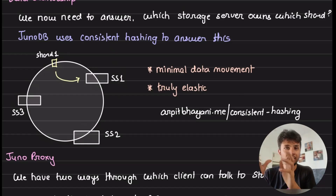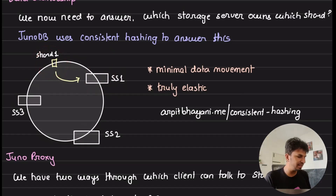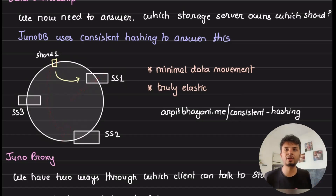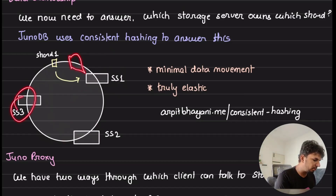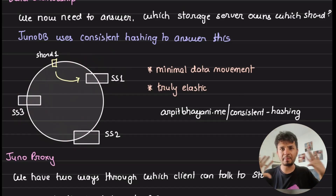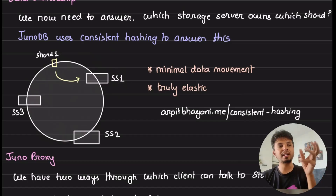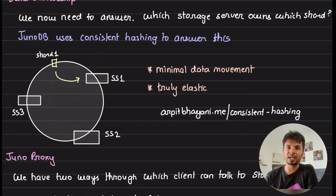The key feature of consistent hashing is minimal data movement. If one storage server goes down, ownership of its shards simply moves to the next node in the ring. If you add a new node, you don't have to move data across all nodes — you just copy data from the adjacent node and start serving. JunoDB uses consistent hashing to determine shard ownership — which storage server owns which shard.